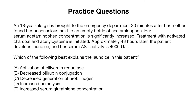For question number one, we have an 18-year-old girl who was brought to the emergency department 30 minutes after her mother found her unconscious next to an empty bottle of acetaminophen. We're dealing with a drug overdose. Her serum acetaminophen concentration is significantly increased. Treatment with activated charcoal and acetylcysteine is initiated. Approximately 48 hours later, the patient develops jaundice and her serum AST activity is 4000. Which of the following best explains the jaundice in this patient?